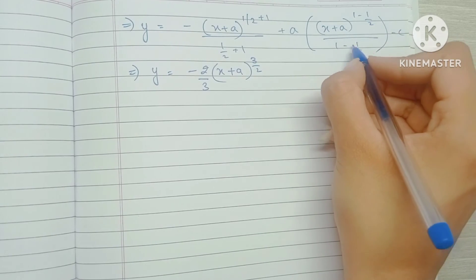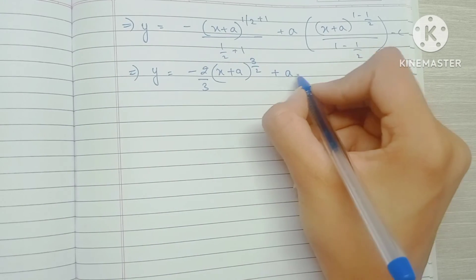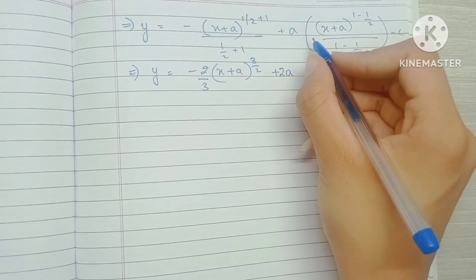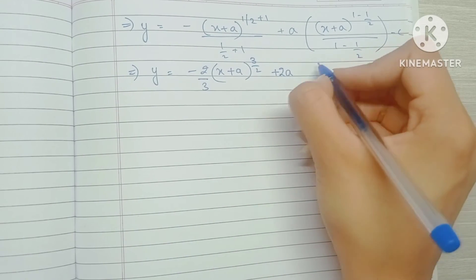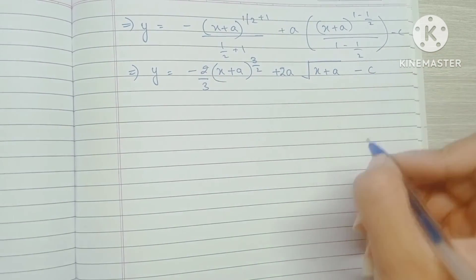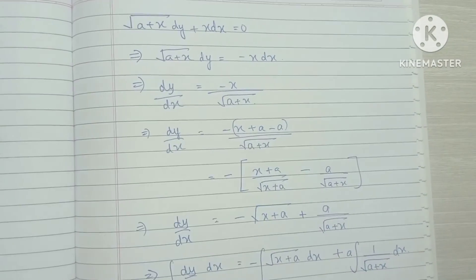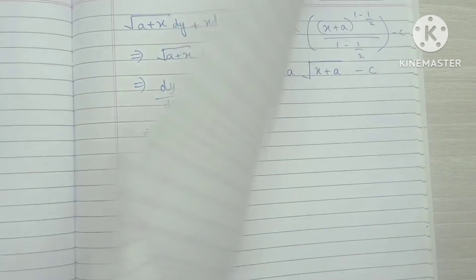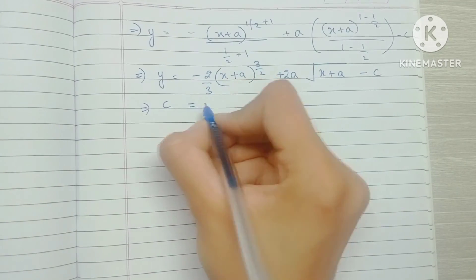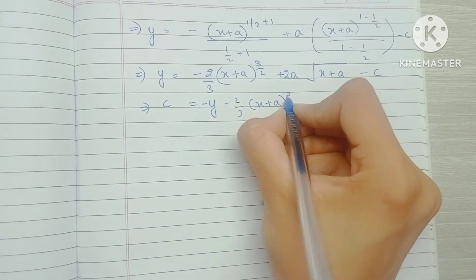Taking reciprocals: the first term becomes (2/3)(x+a)^(3/2), and for the second term 1/(1/2) becomes 2, so we get +2a · √(x+a), minus C.